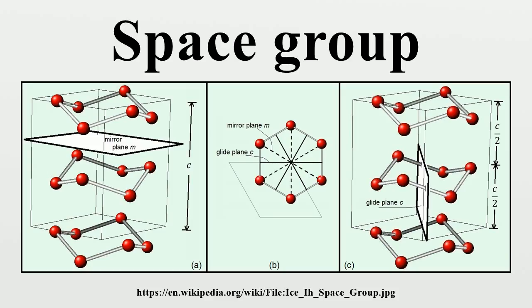Table of space groups in three dimensions. Note: an e-plane is a double glide plane, one having glides in two different directions. They are found in seven orthorhombic, five tetragonal and five cubic space groups, all with centered lattice. The use of the symbol e became official with Hahn.